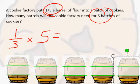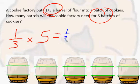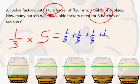So what does that look like? Another way of thinking about this is I could also do one third plus one third plus one third plus one third plus one third. So it's five groups of one third.